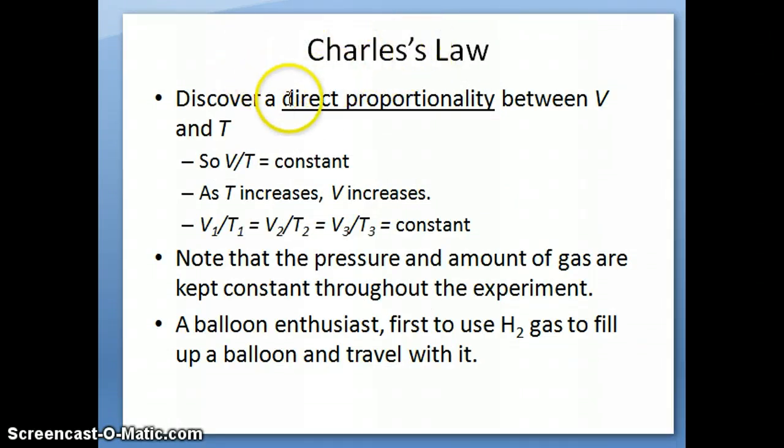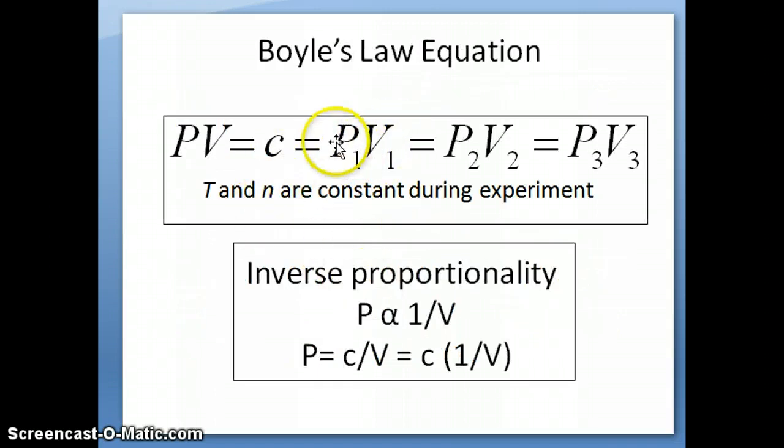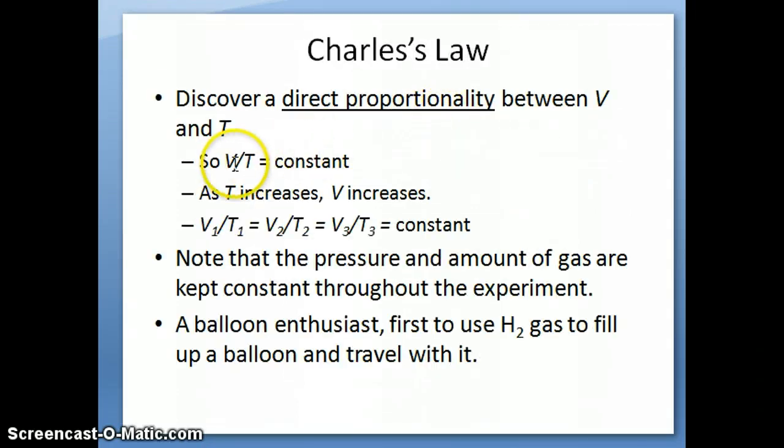What Charles discovered is a direct proportionality between volume and temperature. Remember in Boyle's Law, we talked about the inverse proportionality between pressure and volume, where when pressure goes up, volume has to go down in order for the product to always be the same value or constant. For Charles, he found that when volume and temperature are measured together, when temperature goes up, volume also goes up. That's what we call direct proportionality, and you should be able to differentiate this from inverse proportionality, which is what Boyle observed between pressure and volume relationship.